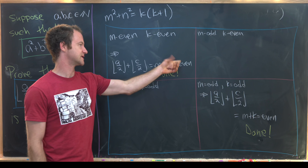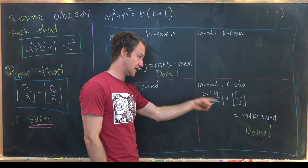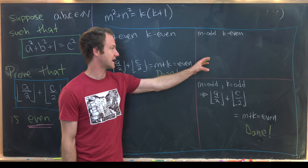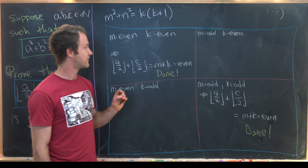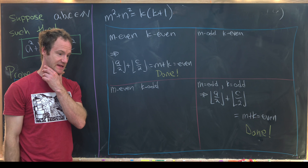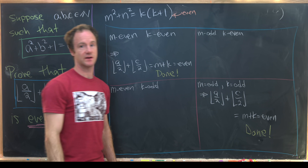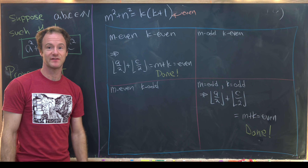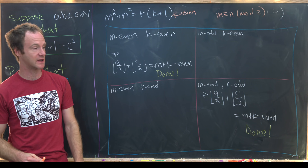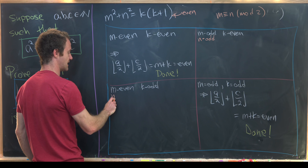If m is even and k is even, then m plus k is obviously even and we're done. Likewise if m is odd and k is odd, then m plus k is even because odd plus odd is even. So we need to carefully analyze the two remaining mixed cases. A key trick here: between k and k plus one, exactly one is even, so their product k times k plus one is even. That means m squared plus n squared is even, which forces m and n to have the same parity — so if m is odd then n is odd, and if m is even then n is even.